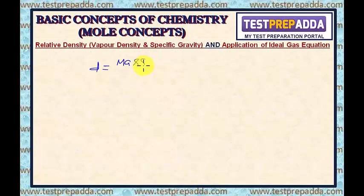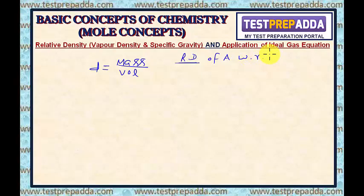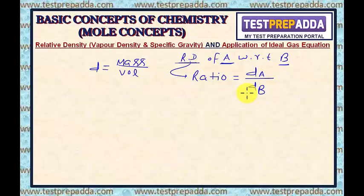We all are aware of absolute density. The mathematical definition of density is mass upon volume. Now, what is relative density? The relative density of substance A with respect to substance B is the ratio of the absolute density of A upon the absolute density of B. So the ratio of the density of substance A to the density of substance B is known as the relative density of A with respect to B.